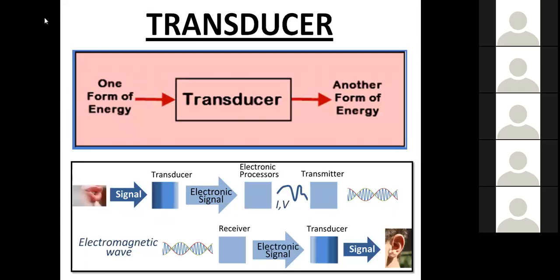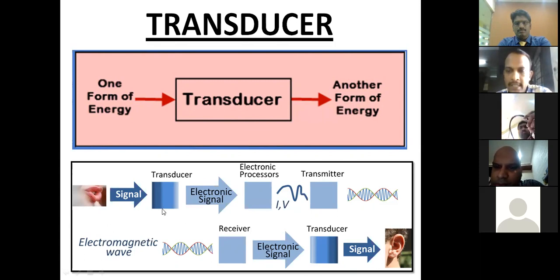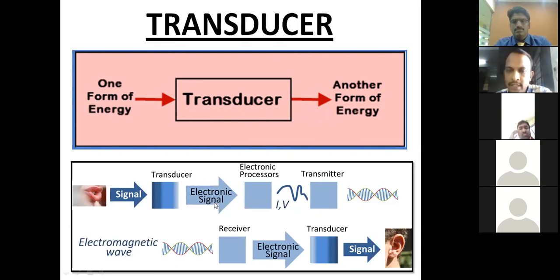Now let us come to the first topic. The first topic is a transducer. A transducer is a device which converts one form of energy to another form. Here I want to give you two basic biomedical-based applications. So whenever we speak, it is just a communication-based example — an audio signal. By using a transducer, it is converted to electrical signals, and processes like speech processing are done with current, voltages, and frequencies.